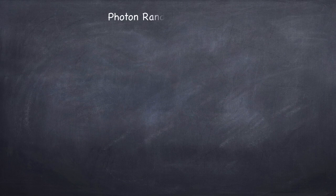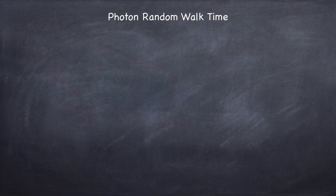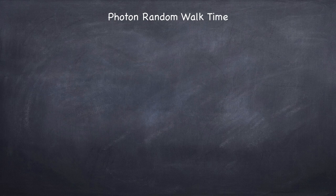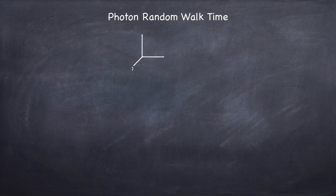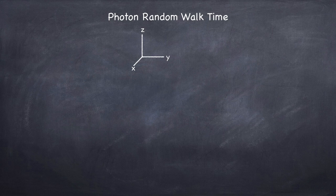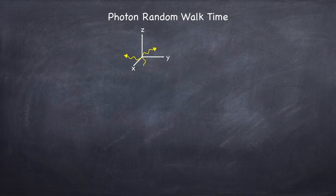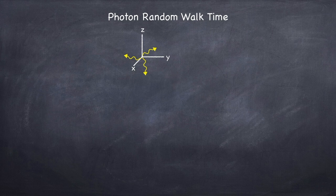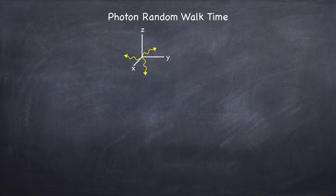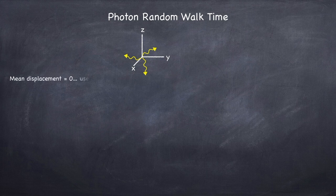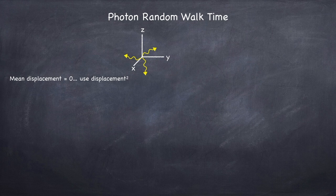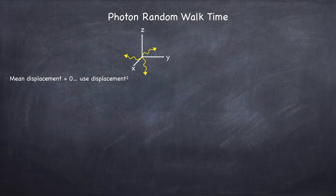Now that we have the mean free path, we can figure out the photon random walk time. However, there's a little bit of a problem. When photons scatter off electrons, they scatter in a random direction. So photons are just as likely to go up as down, left as right, or in as out. And so on average, their mean displacement will be 0. So instead, we're going to look at the displacement squared, because this is always a positive quantity.